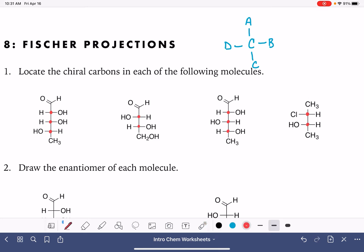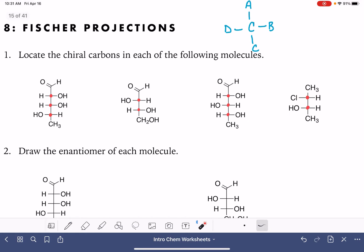And then we've got one more over here. So again, like I said, in general, the carbon atoms that are at the intersections of the horizontal and vertical bonds, those ones are almost always chiral.